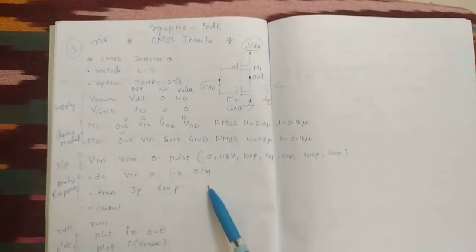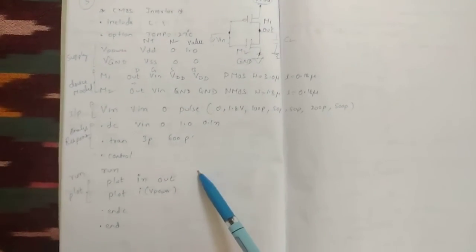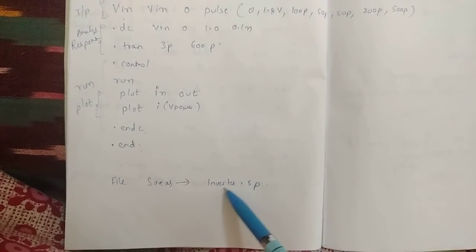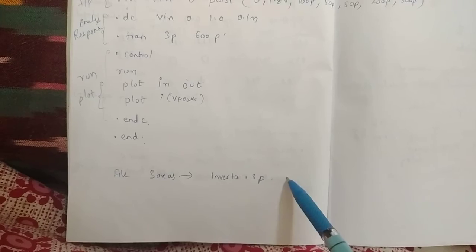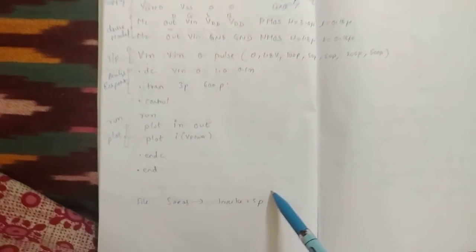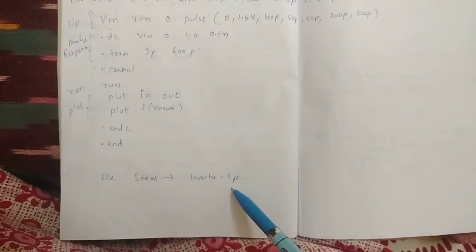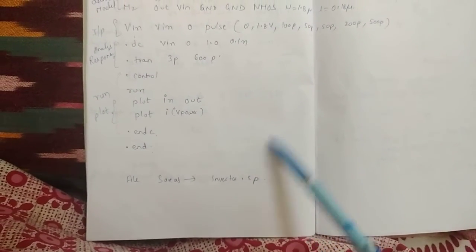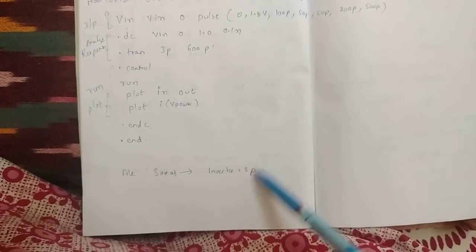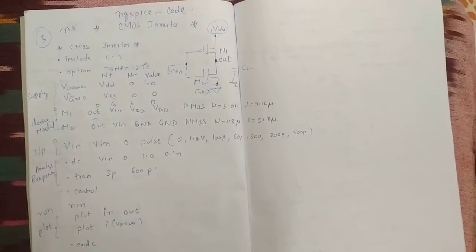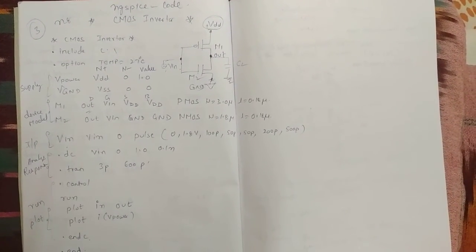This should be typed in a text editor. After that, save the file as CMOS_inverter.sp, because this is written in ngspice. You have to save as .sp. Similarly, if you are typing in PSpice, you have to type as .cir. So this is how we write the code for CMOS inverter.